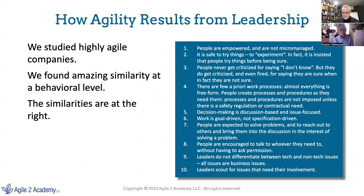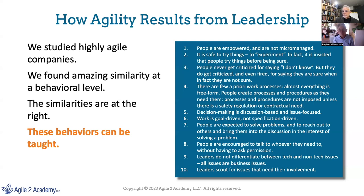In our examination of highly agile companies, we found no similarities in terms of processes and practices — there was nothing in terms of process or practice that was common to all the companies we looked at. But what we did find is huge behavioral overlap — in terms of behavioral norms in those organizations. These are some of the behaviors we found to be very common. And these behaviors can all be taught.